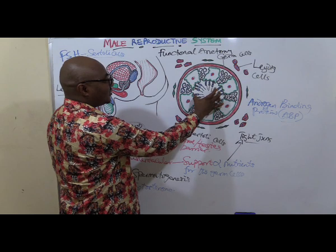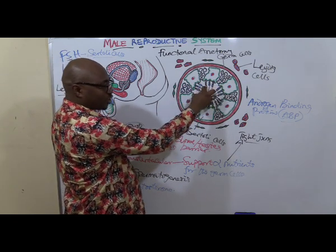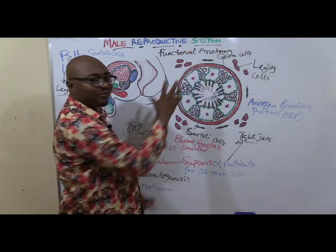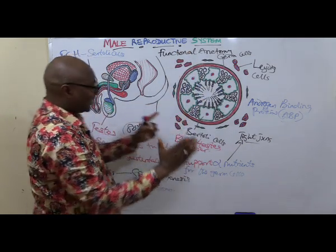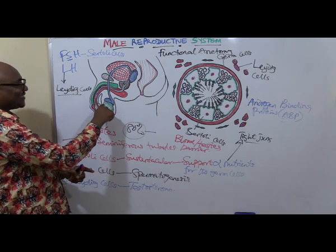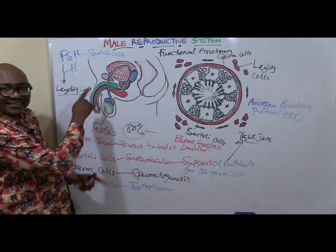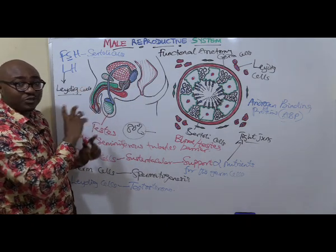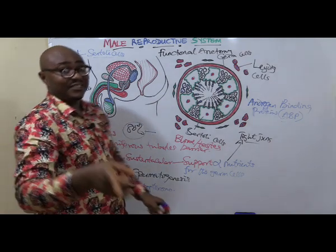Once sperm cells are mature enough, they are moved away from the seminiferous tubules. So now we are done with what happens in the testis, and we're going to see the different parts of the internal genital tract of the male.